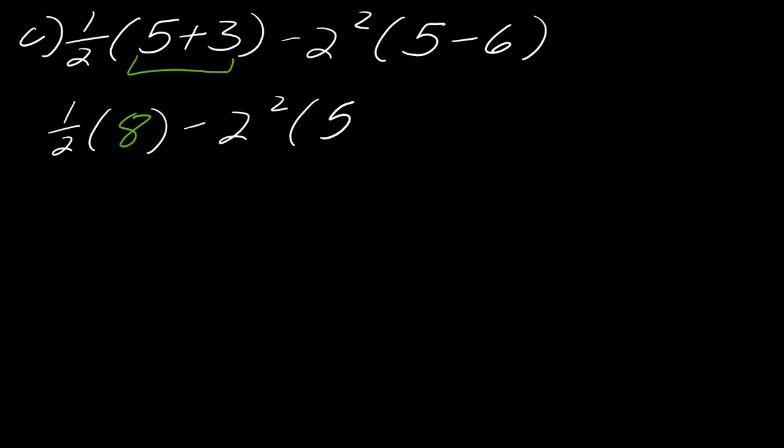And now we're going to deal with the other set of parentheses. So 5 minus 6, this part right here, this is 1 half times 8 minus 2 squared times negative 1. And I'll put that negative 1 in gold just to keep my color coding scheme.